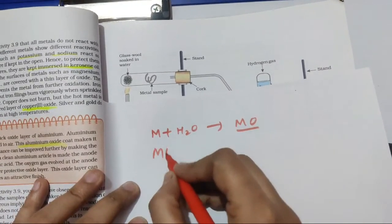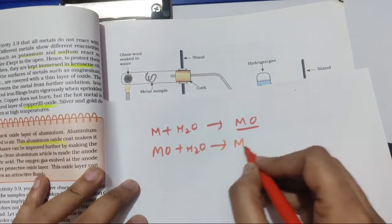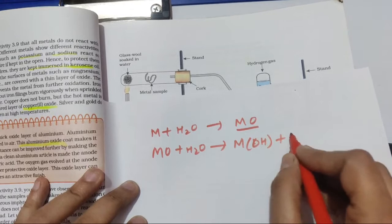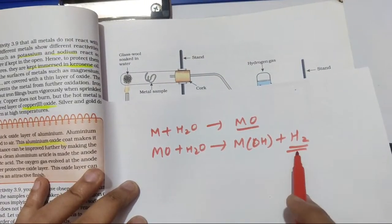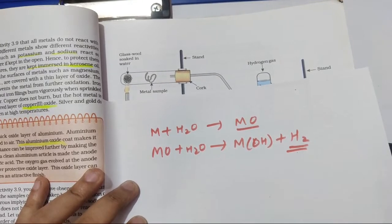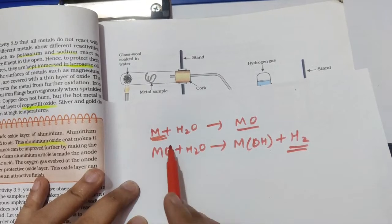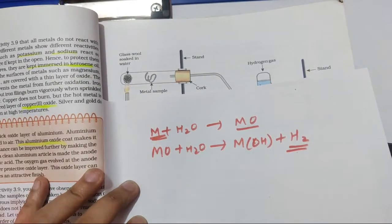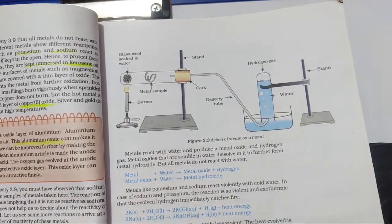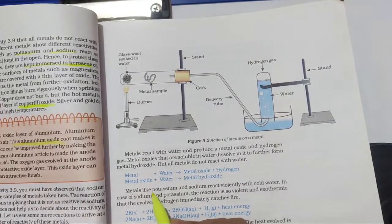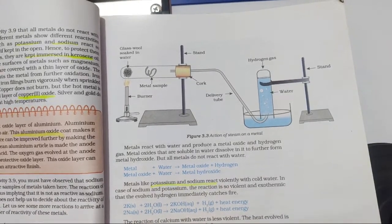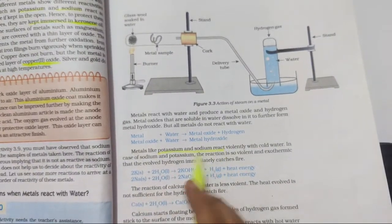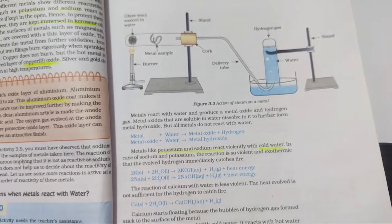Metal reacts with water forming metal oxide, which then forms metal hydroxide, and hydrogen gas is released. Not all metals have the same reactivity — this is where many MCQ questions come from. First important point: potassium and sodium react violently even with cold water. You must know which metal reacts and which does not.